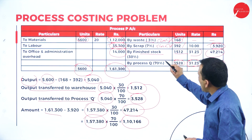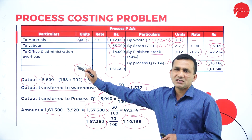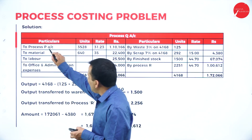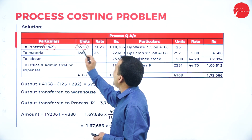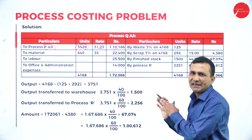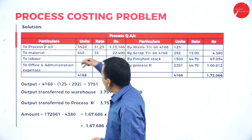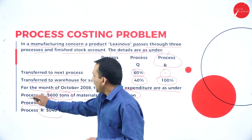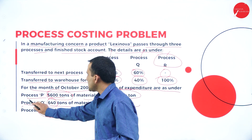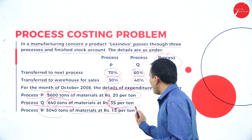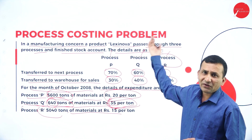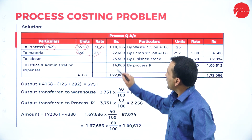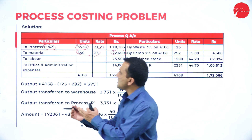What is carried forward in Process P's credit side now appears on Process Q's debit side. In Process Q, 3,528 units are brought from Process P at ₹31.23 per ton. Additionally, 640 tons of new material are introduced at ₹35 per ton: 640 × ₹35 = ₹22,400. Labour cost for Process Q is ₹25,500, which goes directly to the debit side.